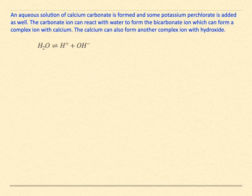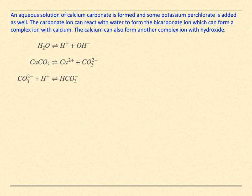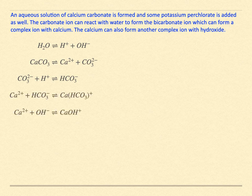Water, of course, always provides hydronium and hydroxide. Calcium carbonate dissociates to calcium 2+ and carbonate 2-. The description reminds us that bicarbonate, HCO3-, is present. It also mentions a couple of other ions that form with calcium: the bicarbonate ion, calcium bicarbonate, and the hydroxide, calcium hydroxide ion. The potassium perchlorate releases both K+ and ClO4- ions.